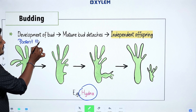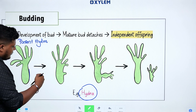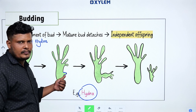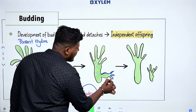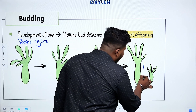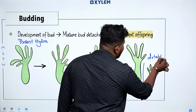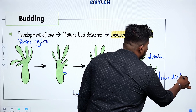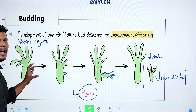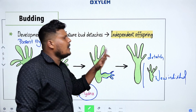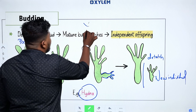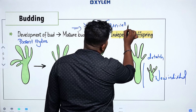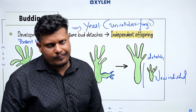Next mode is Budding. This is the parent Hydra. On its side, a lateral outgrowth — a projection — called a bud starts developing and growing. Finally, the bud detaches and becomes a new individual, a new Hydra. One parent, one bud, one independent Hydra — this is budding. Budding is also applicable to yeast, which is a unicellular fungi.